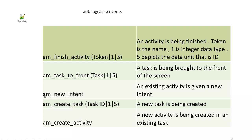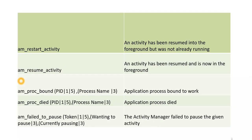`am_new_intent` — as the log message itself tells, an existing activity is given a new intent. `am_create_task` means a new task is being created. `am_create_activity` means a new activity is being created. The good thing about Android is that most of the logs are self-explanatory — `am_create_activity` tells you activity is created, `create_task` tells you a new task, `new_intent` tells you a new intent is triggered. Most of the logs are user-friendly and self-explanatory.